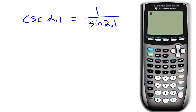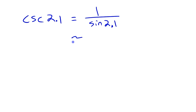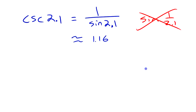So for cosecant of 2.1, we find the sine ratio and then take its reciprocal: 1 divided by sine of 2.1. You can do this in two calculator steps — find sine of 2.1, then divide 1 by that answer — giving roughly 1.16. Or do it all in one step: 1 over sine of 2.1. Notice we flipped the ratio over, not the angle. Writing sine of (1 over 2.1) would be wrong — it's the reciprocal of the ratio, not the angle.